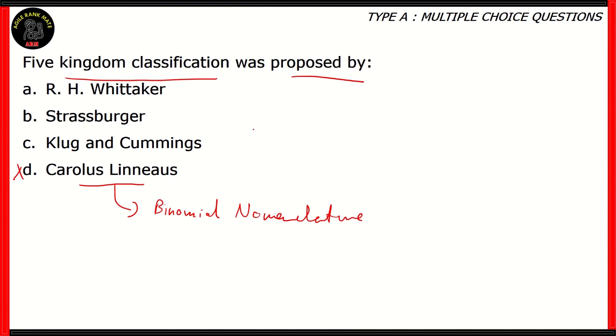What about option C, Kluggen-Cummings? Well, both of these scientists were known for observing eugenesis in Drosophila, also known as the fruit fly. So option C is incorrect. Next we have Strasburger. Strasburger was renowned for the observation of double fertilization in angiosperms. So he was a botanist. Option B is also incorrect.